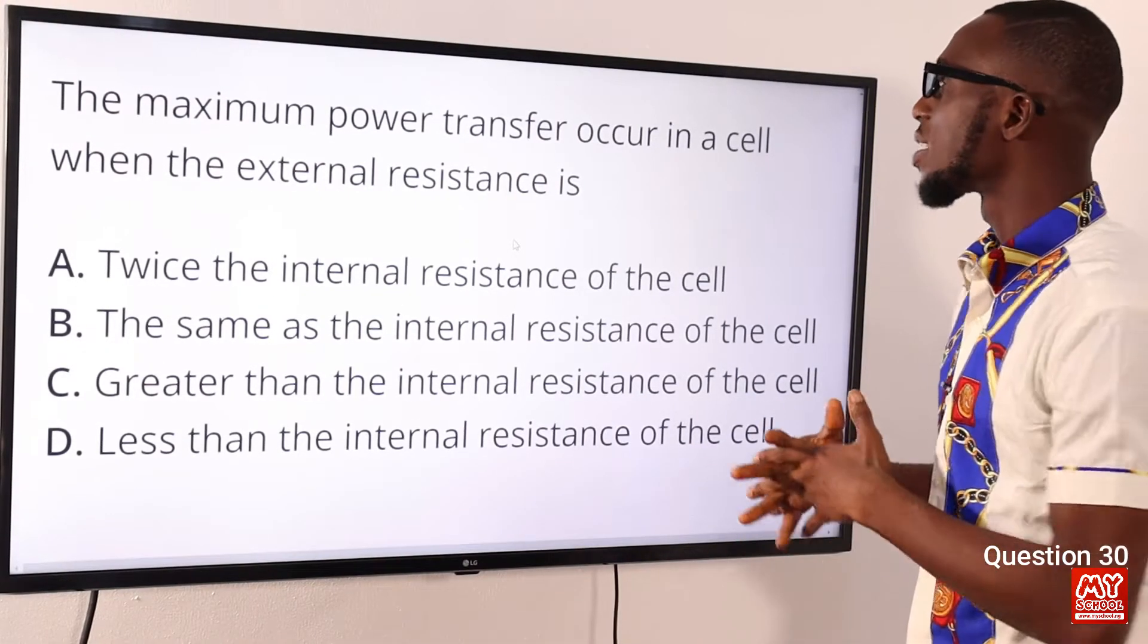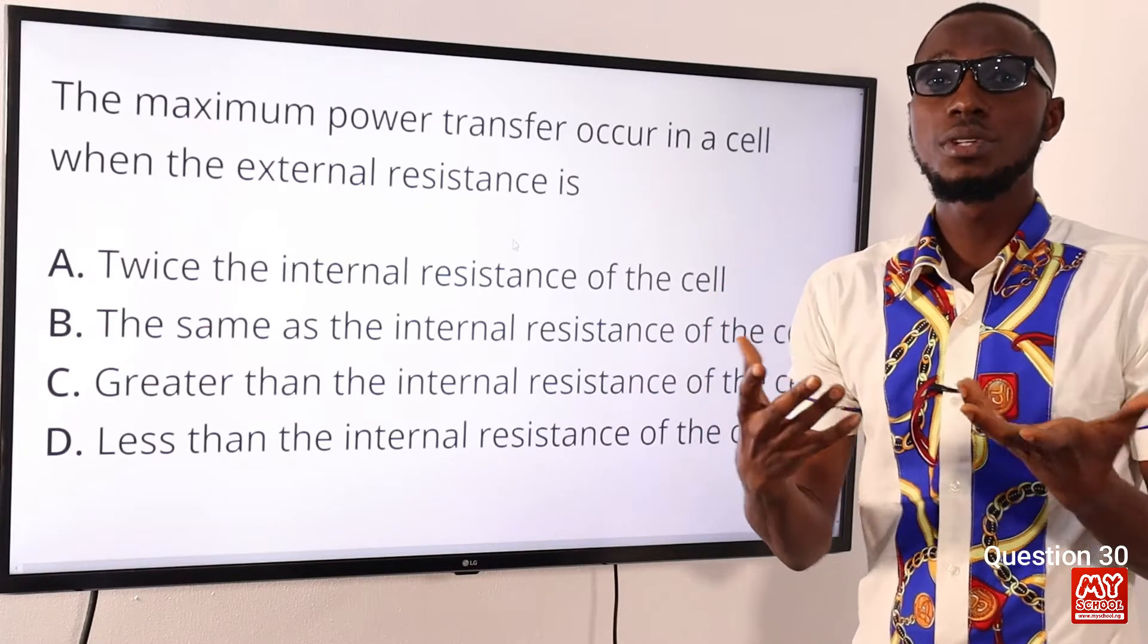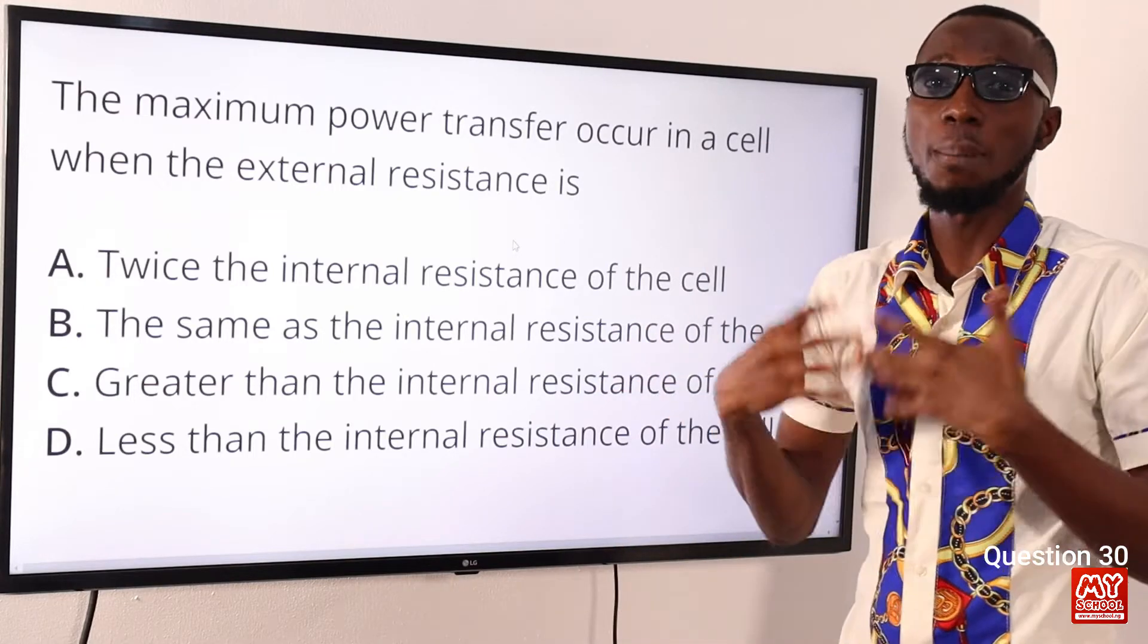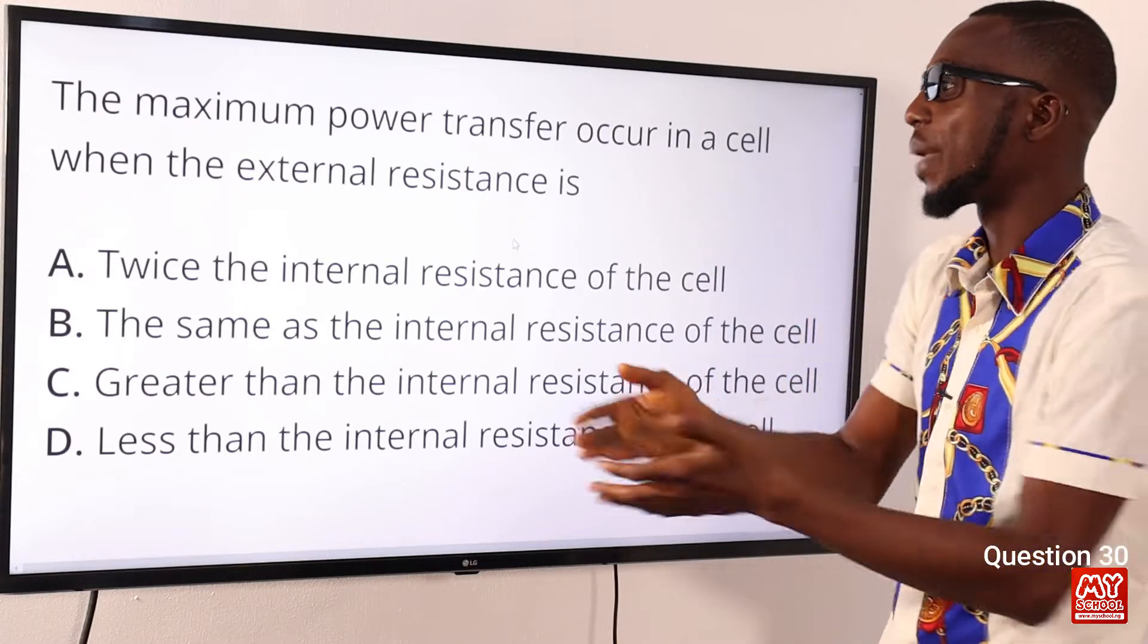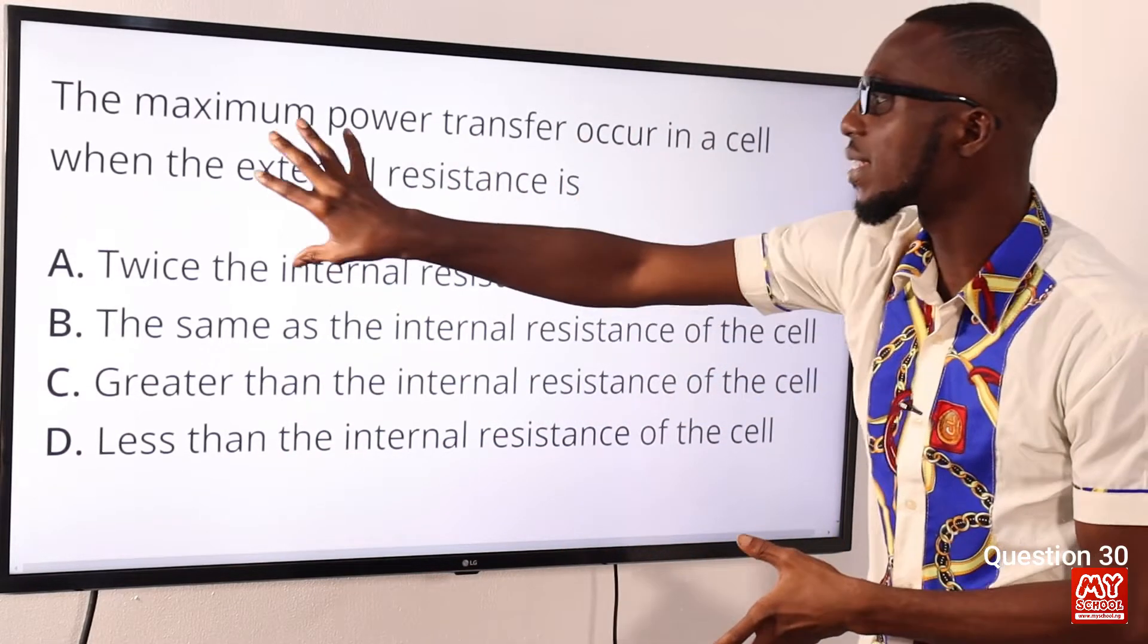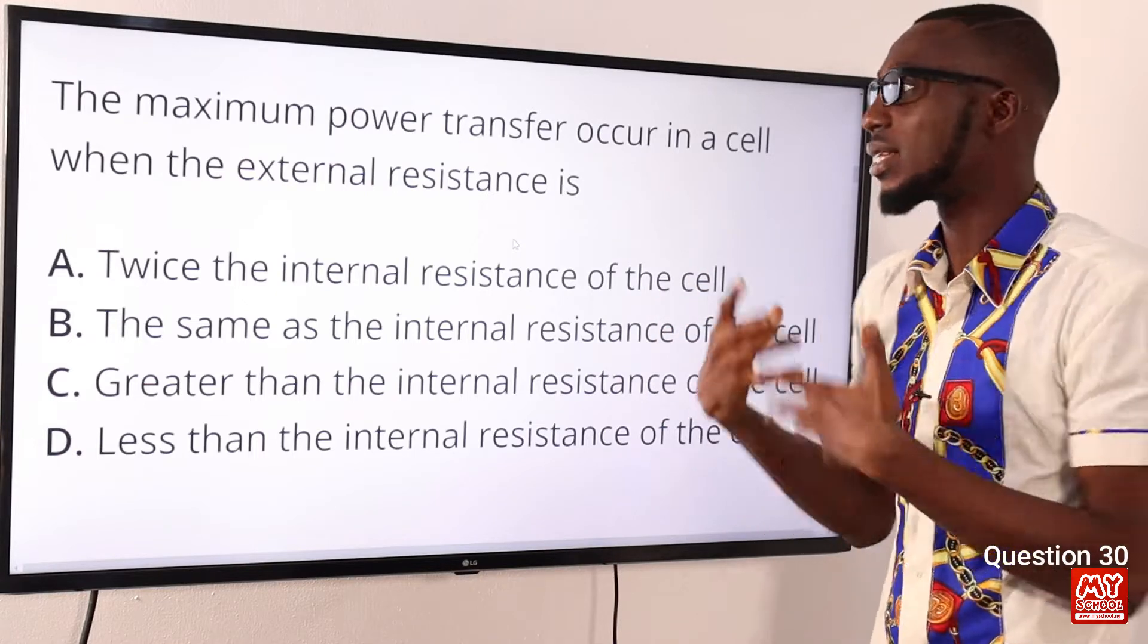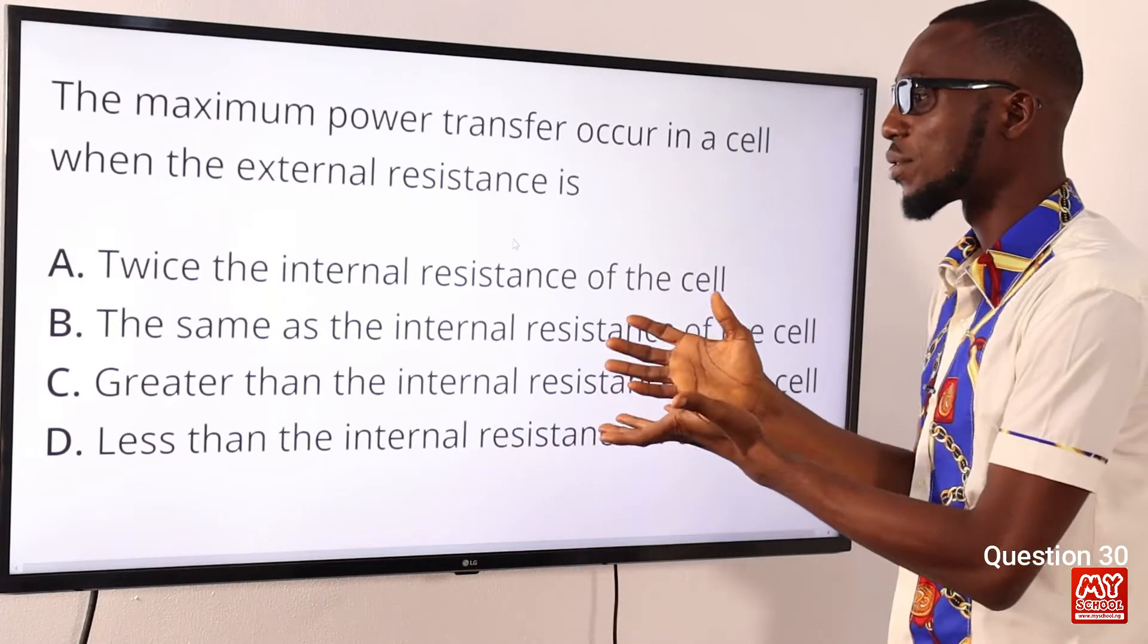Question 30. The maximum power transfer occurs in a cell when the external resistance is what? So when we talk about a cell, the internal resistance is the opposition to the free flow of current. That means the more the internal resistance of a cell, the greater the opposition to the flow of current or to the supply of current. So that means for a cell to supply current at its maximum capacity or the maximum power transfer occur in a cell when that internal resistance is lower when you compare it to the external resistance. The correct option here will be option C that the maximum power transfer occur in a cell when the external resistance is greater than the internal resistance of the cell. So, option C is your correct option.